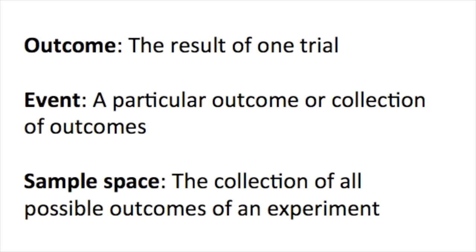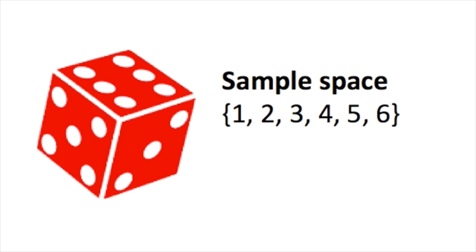Let's apply these terms to the die and card examples. When rolling one die, the sample space is 1, 2, 3, 4, 5, 6. In other words, when we roll one die, there are 6 possible outcomes.